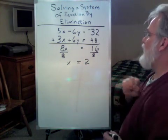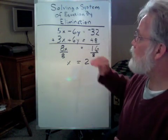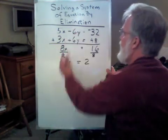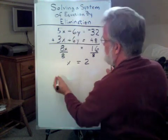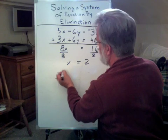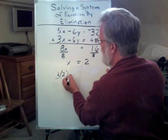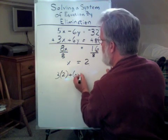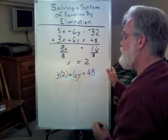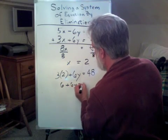Now we're going to substitute in. We're going to do a little plug-and-chug to get my y back. We've done this before already. Here we have, let's go with this one right here. 3x, but I know what x is. x is 2. So, that's 3 times 2 plus 6y. Don't know what y is yet. That equals 48. So, that's 6 plus 6y equals 48.